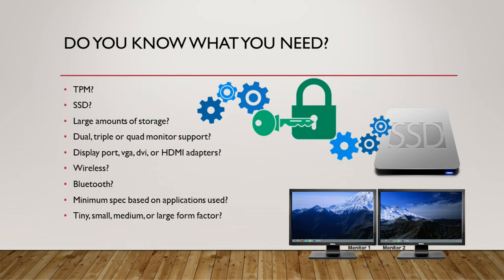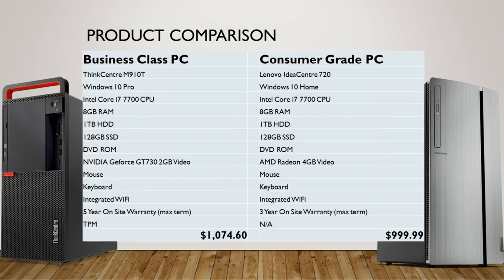Then there's the form factor of the computer itself. You may want something very small if you have a confined space, or something much larger if you want flexibility to add different video cards or add-ons later on. On this slide, I have a consumer grade computer on the right and a business class on the left. Most of the configuration is identical. The difference is on the business class you have a Windows 10 Pro operating system; consumer is Windows 10 Home. Pro allows you to join a corporate domain, whereas Home does not. It also has a TPM on the business class computer, and it does not on the consumer grade computer.